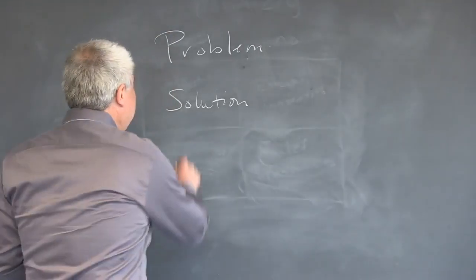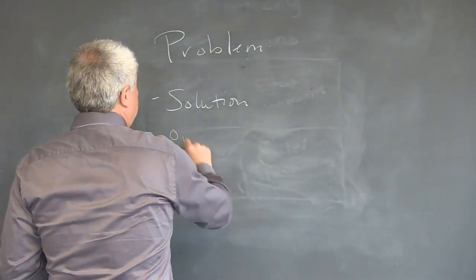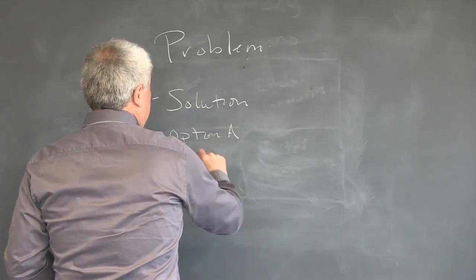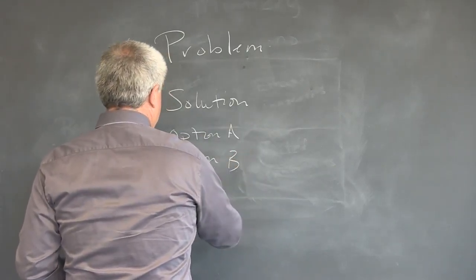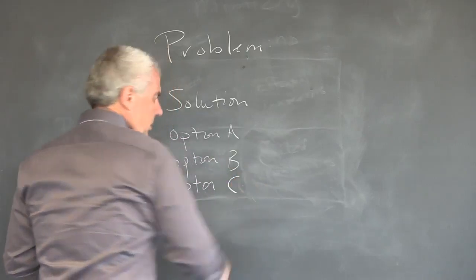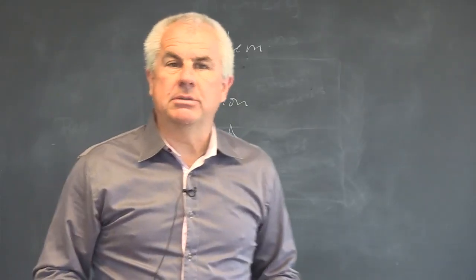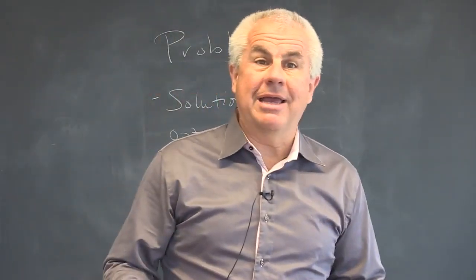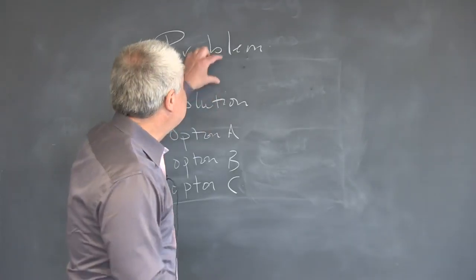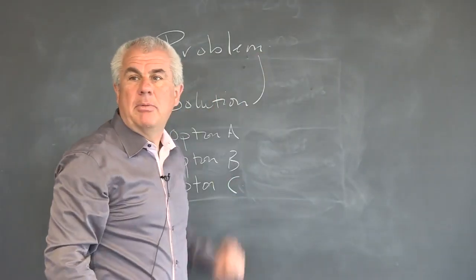I say, okay, now write down — other than the solution you've written down — write down option A, option B, and option C. Oftentimes they can't do this. Why can't they do this? They can't because they have drawn too tight a link between the problem and the solution.